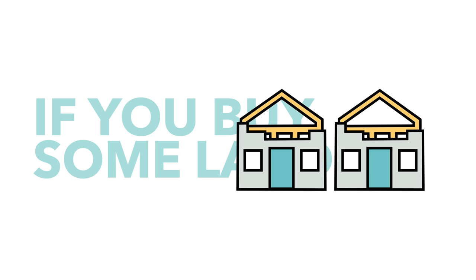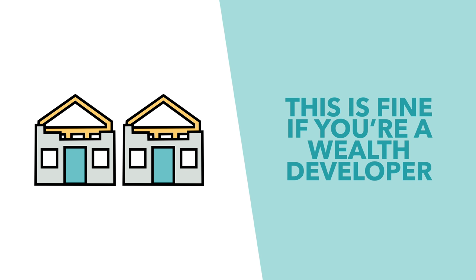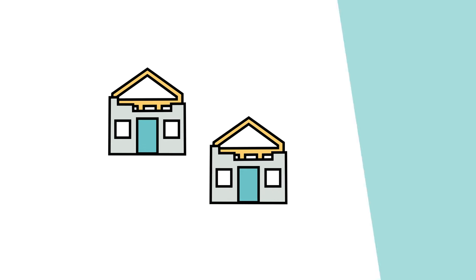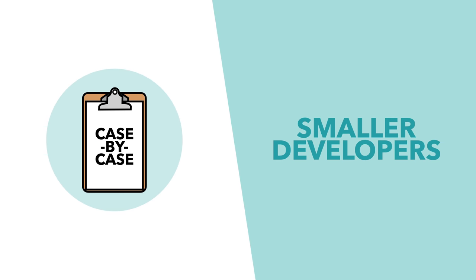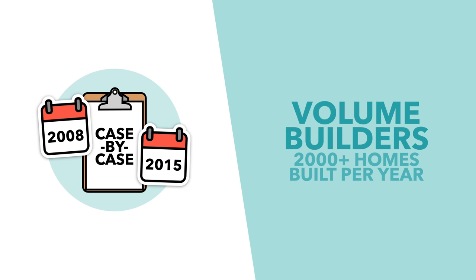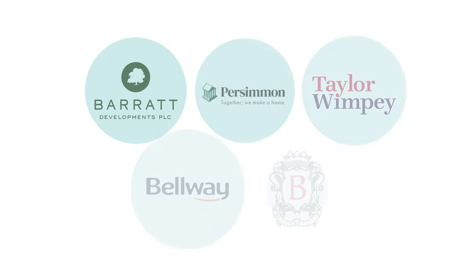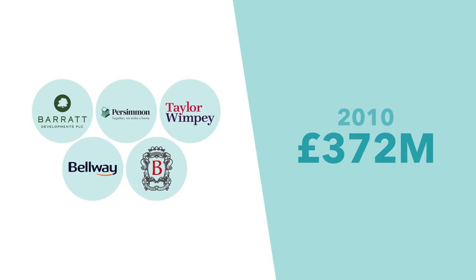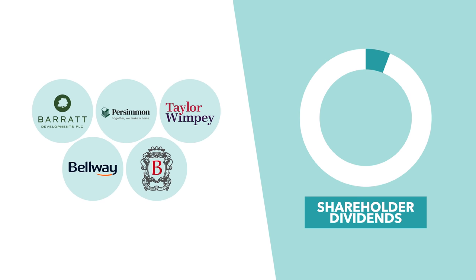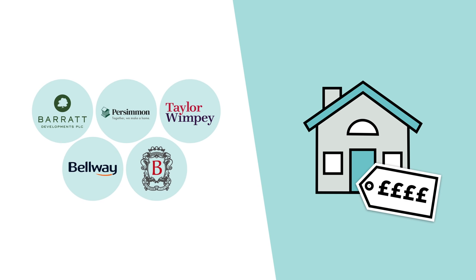Essentially, if you're a developer and you buy land hoping to develop it, you don't know if you'll actually be allowed to — unlike in a zonal system. This is fine if you've got loads of money; you can wait and reapply, or buy loads of plots hoping some get approval. But it makes things difficult for smaller developers who need the cash flow. That's why from 2008 to 2015, volume builder market share nearly doubled from 31% to 59%, profits from the big five firms quintupled from £372 million to £2 billion, and dividends to shareholders increased from 6% to 43% of profits. When the housing market is run by just a few big firms, we all end up paying more than we should.